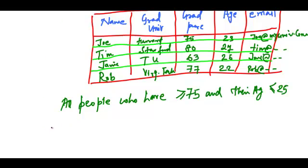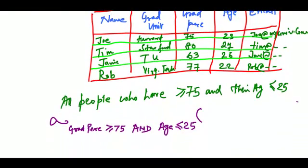What I will do is I will write graduation percentage greater than equal to 75 and age less than equal to 25 from the table's name is Research Students.